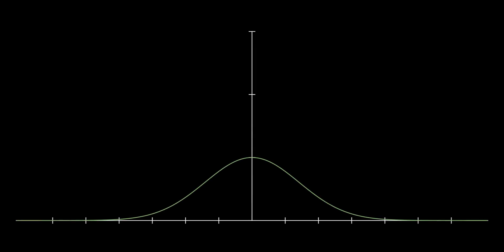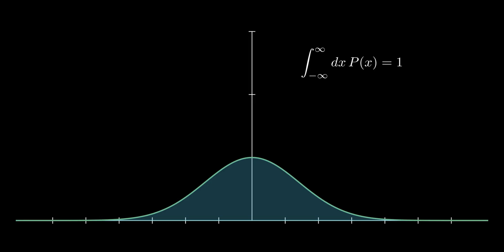This is remarkable, as despite that the function vanishes at every point except x equals to x prime, there is still unit area under the curve. Thus, we have demonstrated the normalizing property of Dirac delta.